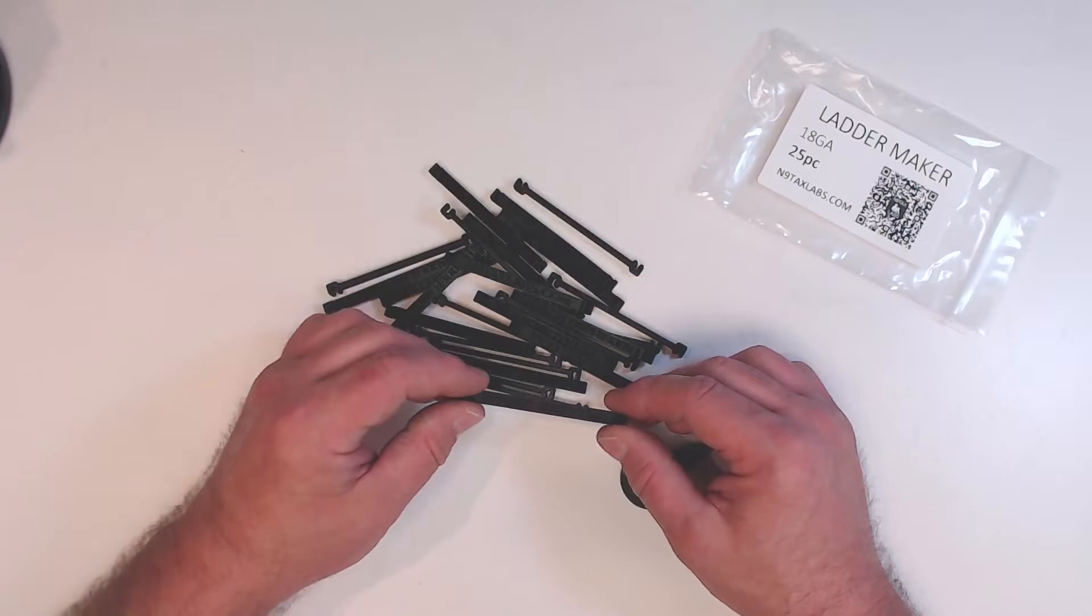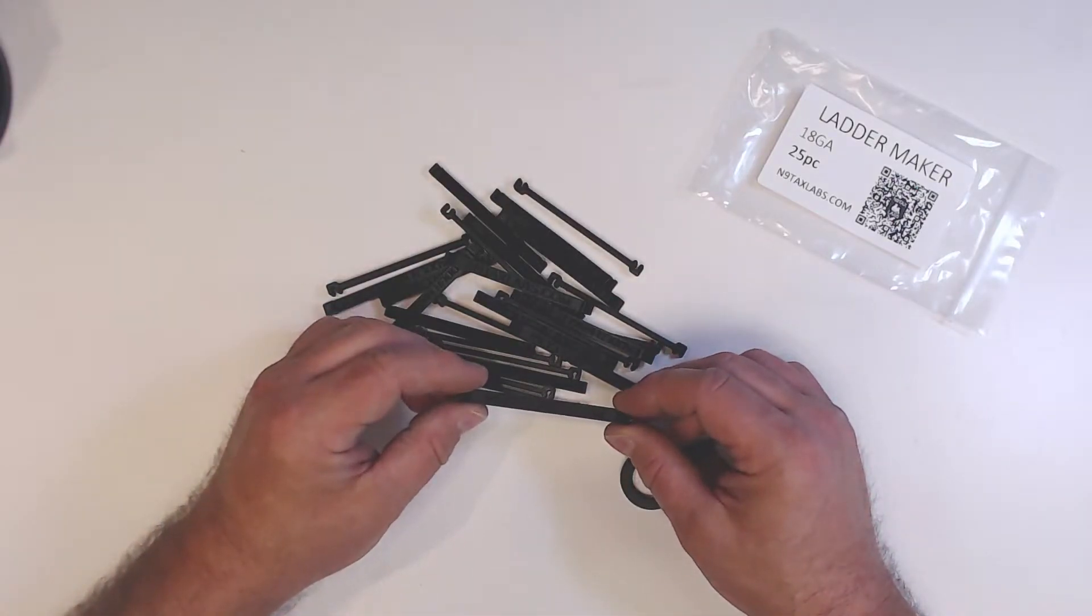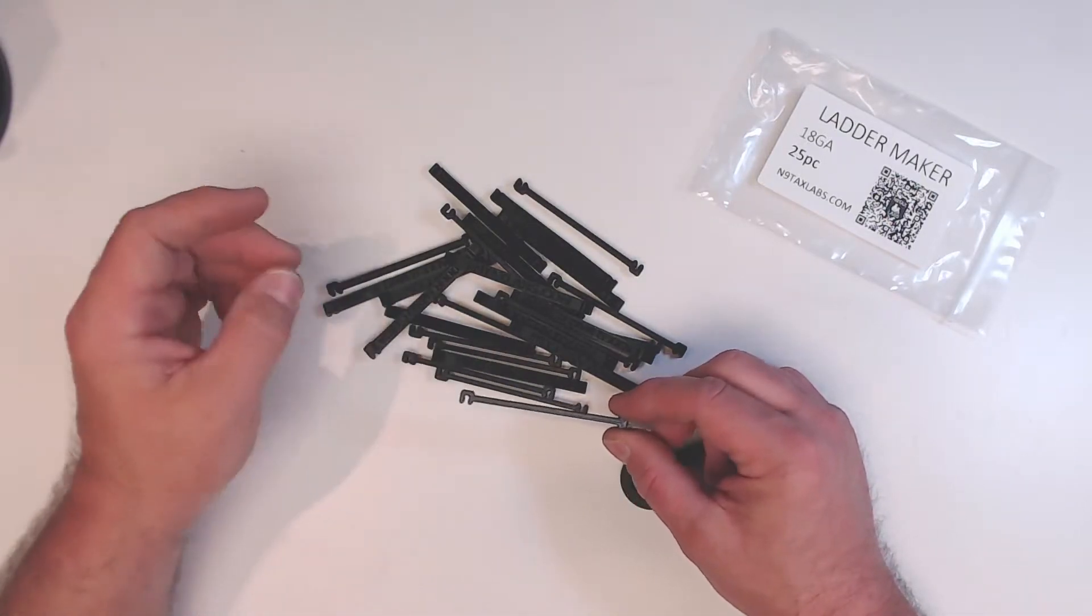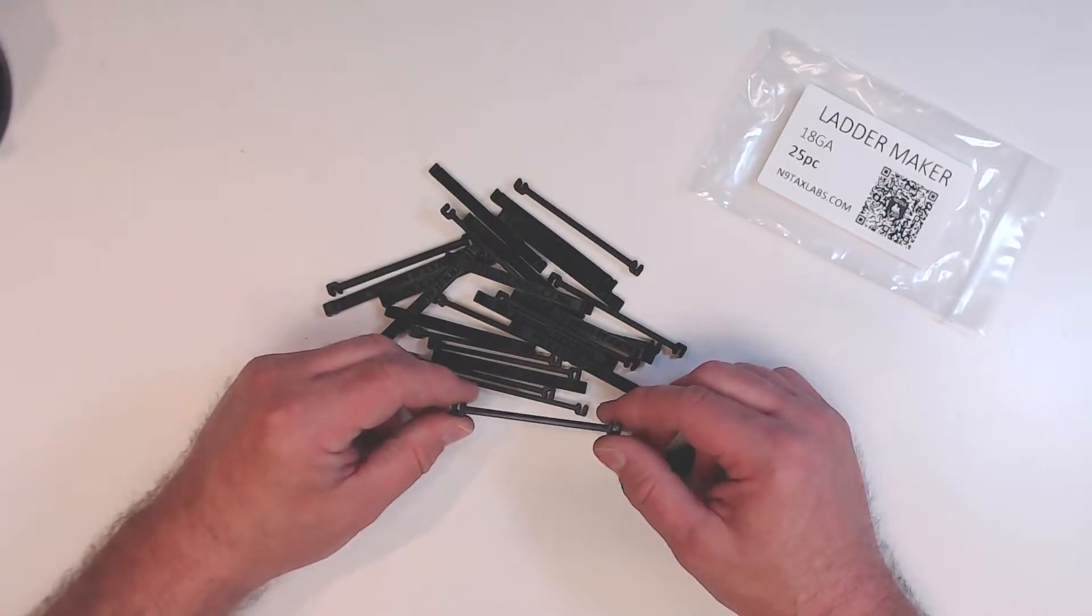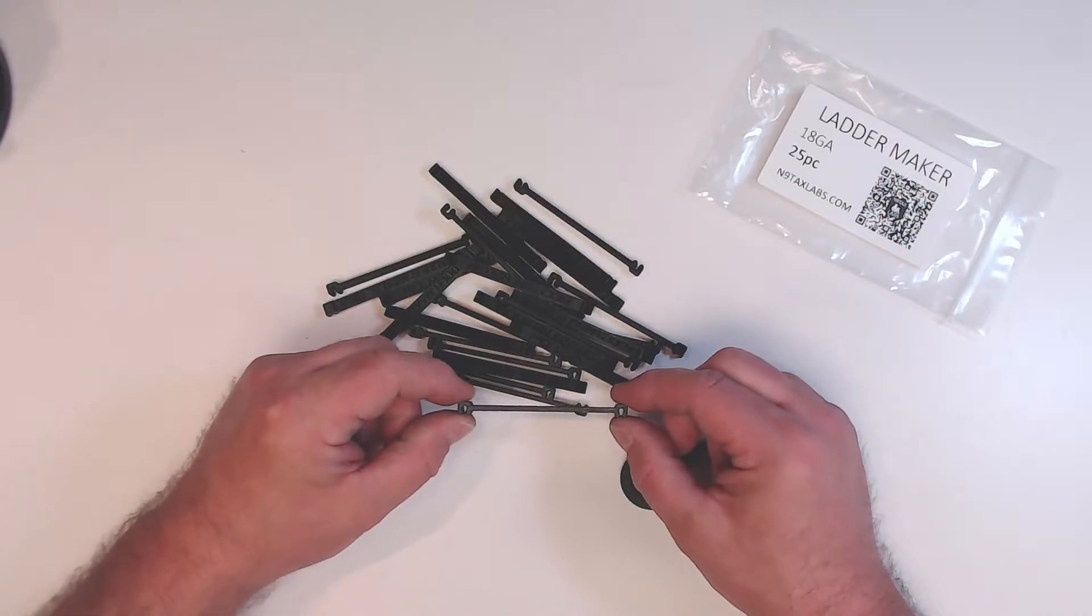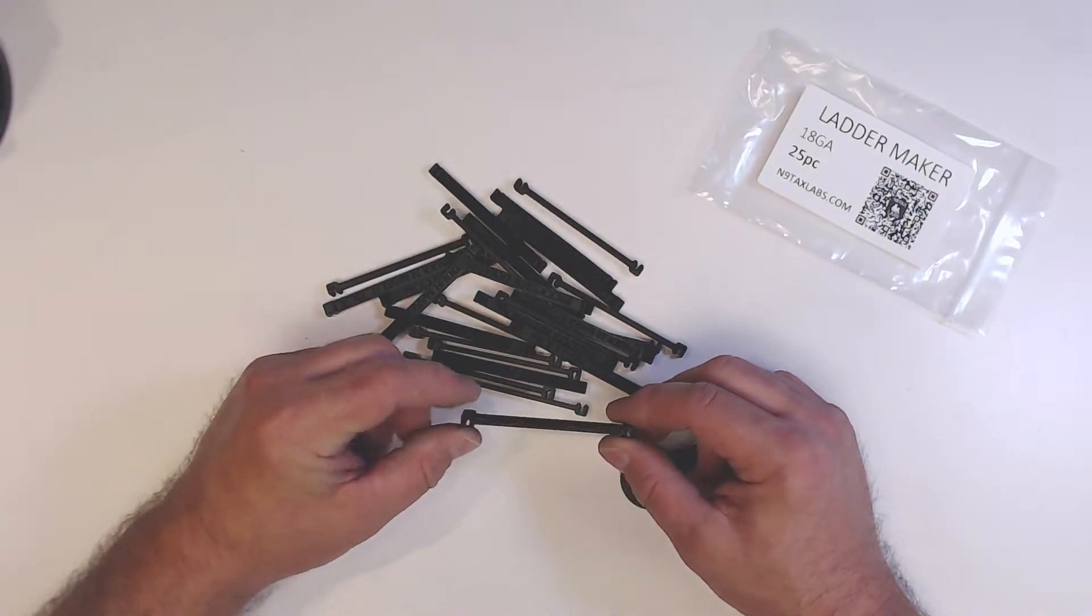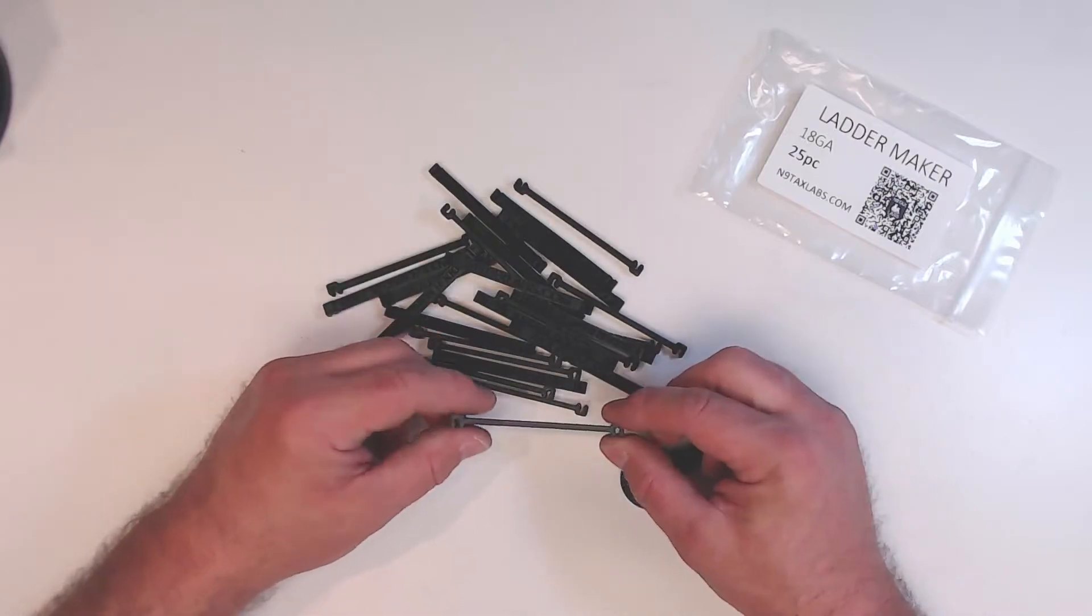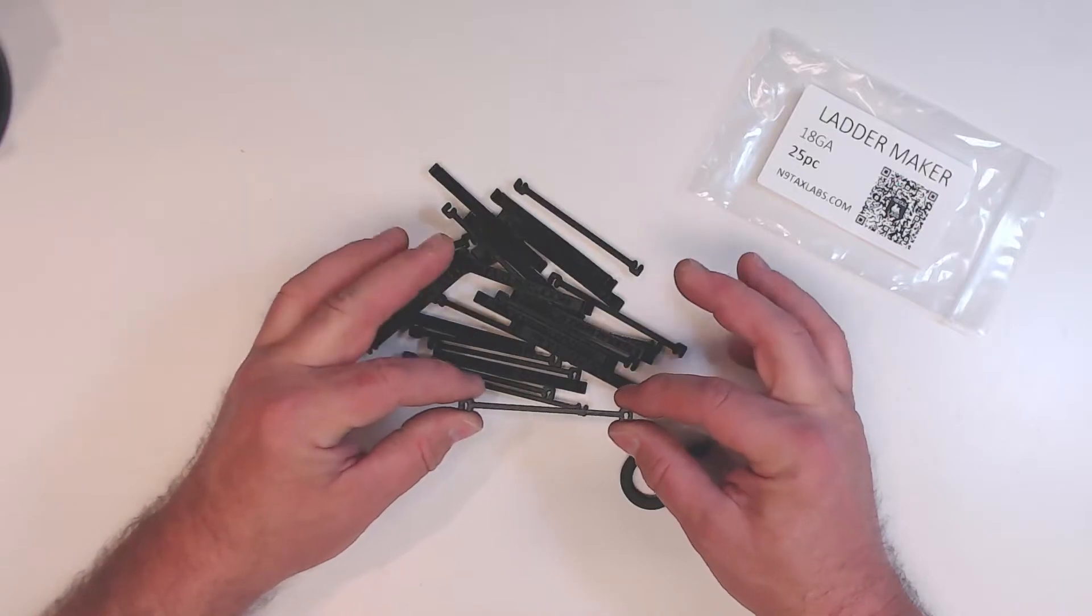We also make these for 14 and 12 gauge THHN. What sets these apart from some of the other spacers on the market today is these are computed to be the correct length for the wire gauge, and you're going to probably get an actual 600 ohm ladder line out of this.